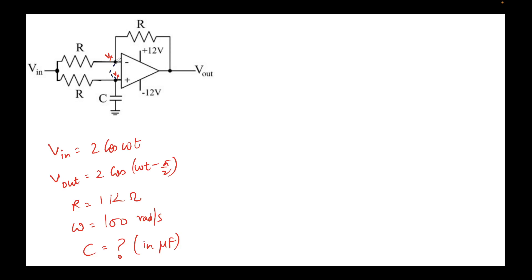Since the current entering here would be zero and similarly current entering here would be zero, let's assume that the current I_1 flows through this arm and the current I_2 flows through this arm.